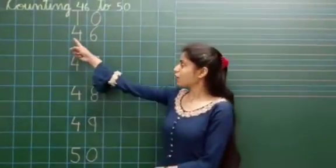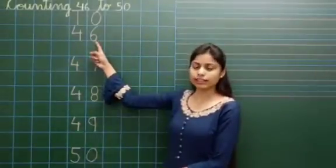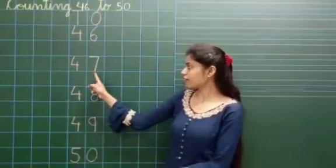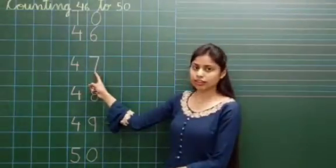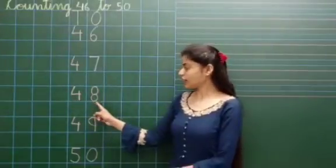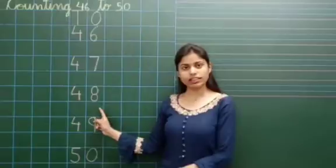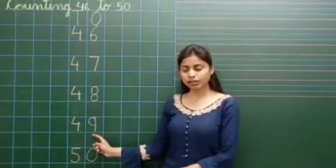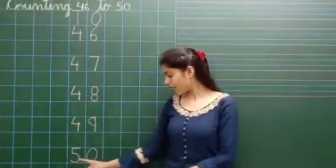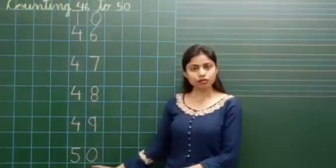Look here, 46, 46, this is the number 46. 47, 47, this is the number 47. 48, 48, this is the number 48. 49, 49, this is the number 49. 50, 50, this is the number 50.